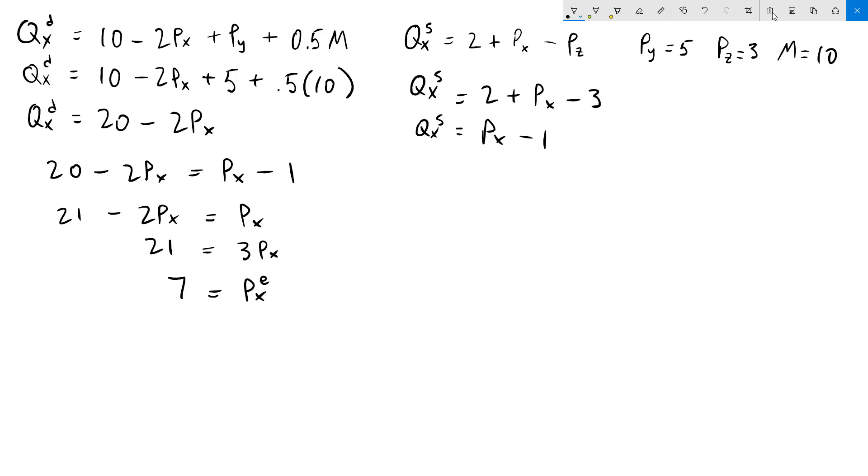Let's try it with the demand function. So our equilibrium quantity will be 20 minus 2 times 7, which is 6. I can verify that by plugging 7 into our supply function as well. We'll get 7 minus 1, which is also 6.